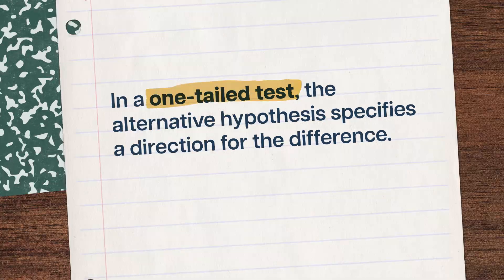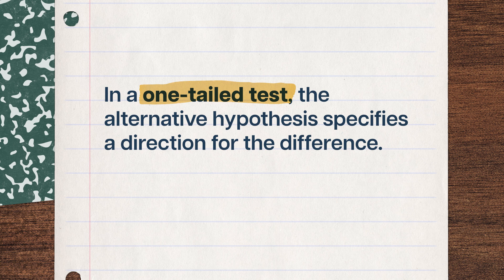We already know how we can use hypothesis testing to figure out if two things are significantly different from each other, but Noah's question actually has another component. He wants to know, specifically, if Median Heights has more traffic now than it did before, which means his hypothesis test needs something else: a direction. We don't mean which way the traffic was flowing, but rather the direction the data travel in our hypothesis relative to our null hypothesis.